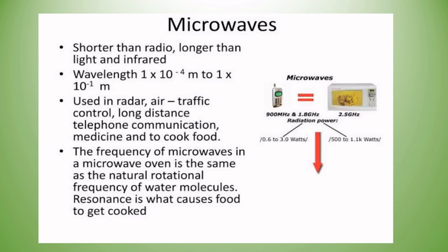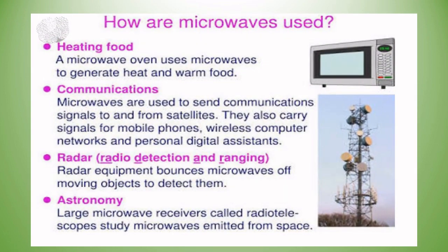Microwave wavelength: 1×10⁻⁴ meters to 1×10⁻¹ meters. Uses of microwaves: heating food, communication, radar, and astronomy. A microwave oven uses microwaves to generate heat and warm food. Microwaves are used to send communication signals to and from satellites, and carry signals for mobile phones, wireless computer networks, and personal digital assistants. Radar equipment bounces microwaves off moving objects to detect them. Large microwave receivers called radio telescopes study microwaves emitted from space.